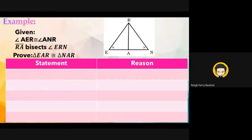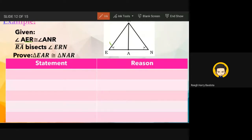For the two-column proof: given angle AER is congruent to angle ANR, and RA bisects angle ERN. When we say bisect, it divides the angle into two congruent angles. RA bisects angle ERN, so angle ERN is divided by RA.